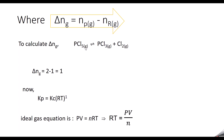For PCl5 dissociating to PCl3 and Cl2, delta Ng equals 2 minus 1, which is 1. Substituting into the relation gives Kp equal to Kc times RT to the power of 1. However, RT should be written in terms of pressure and volume using the ideal gas equation PV = NRT, from which RT equals PV/N.